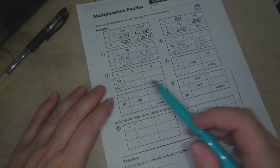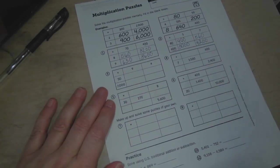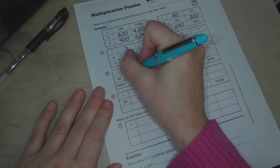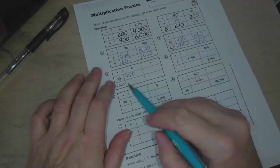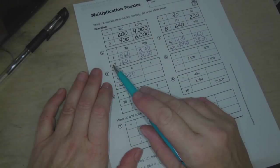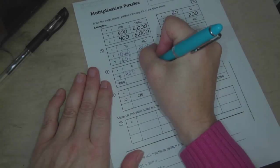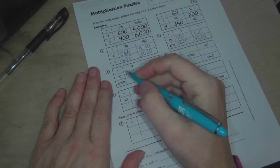Number 3. 50 times 9. 5 times 9 is 45, and then there's one zero on the 50, so we put that making it 450. 50 times 4, so 5 times 4 is 20, and we add the zero.